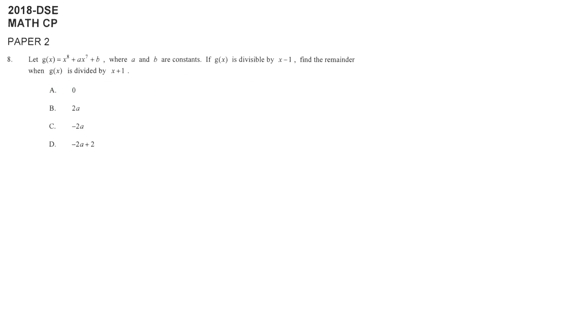Our given information is when g(x) divided by x minus 1, the remainder equals 0 because they say divisible, meaning the remainder is 0. By remainder theorem, the remainder can be directly found by substituting a suitable x to make the divisor become 0.